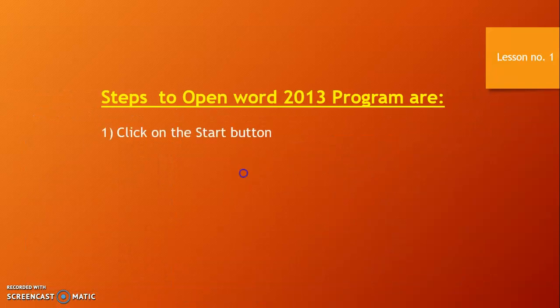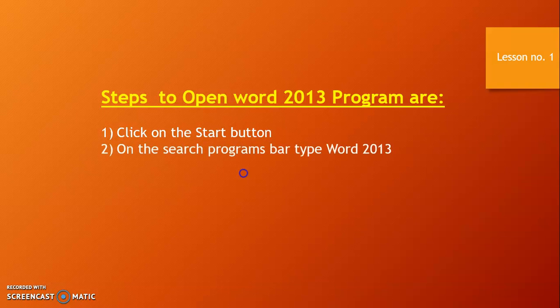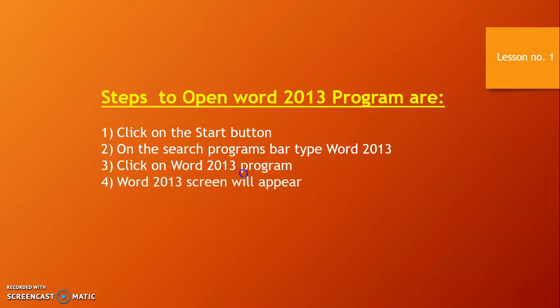Steps to open Word 2013: click on the start button, click on the search program bar, type Word 2013, click on the Word 2013 program, and the Word 2013 screen will appear.